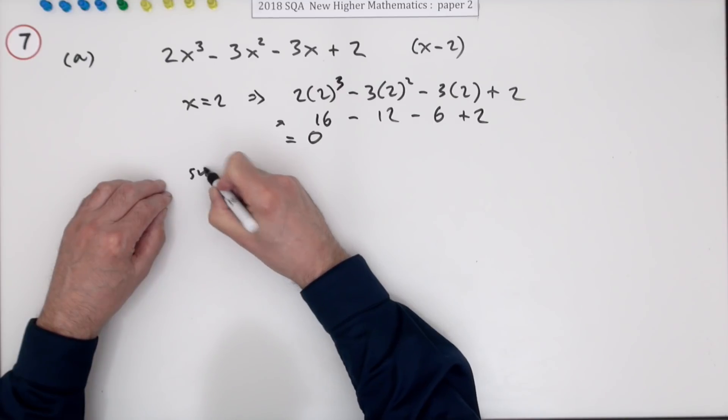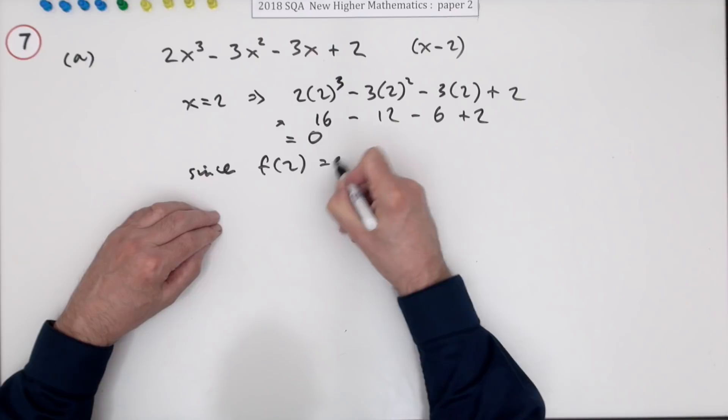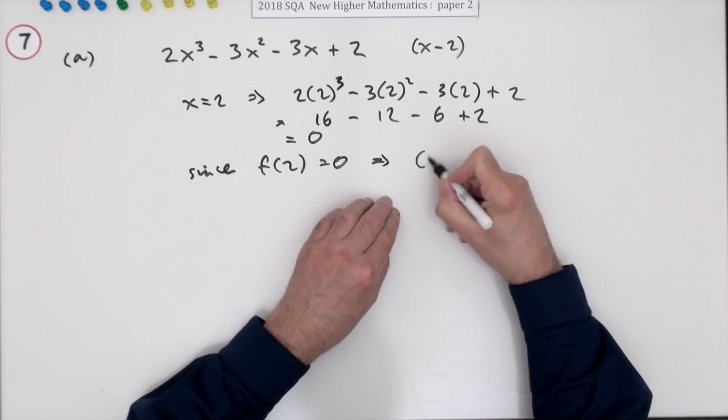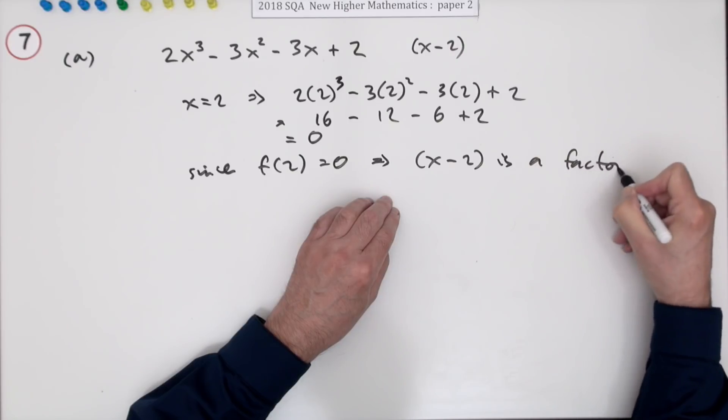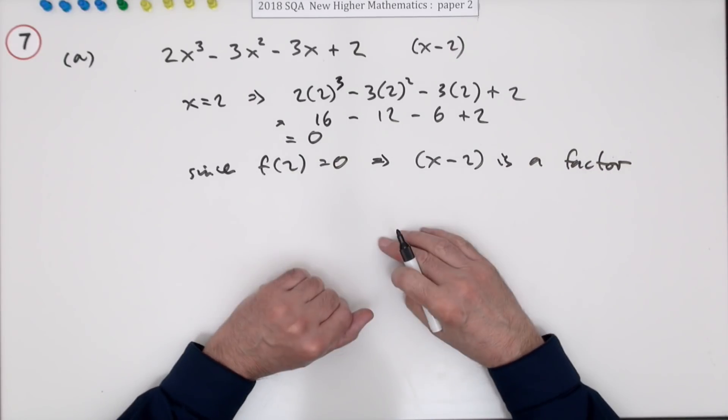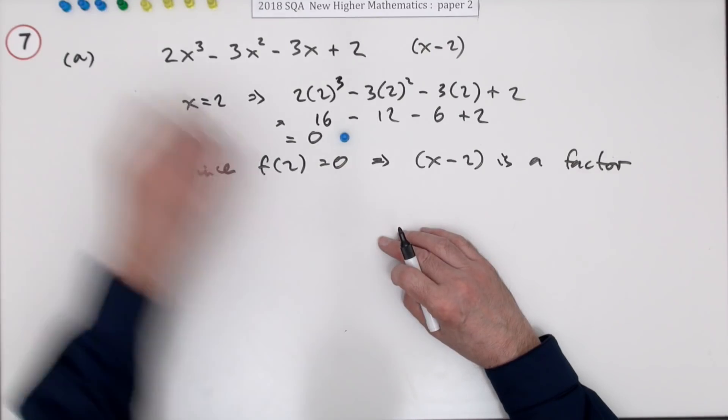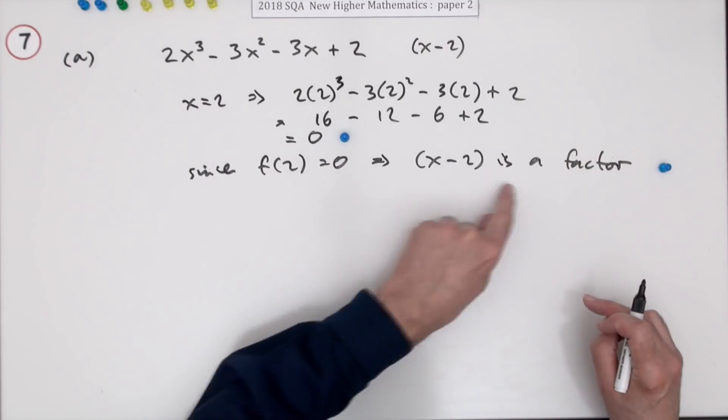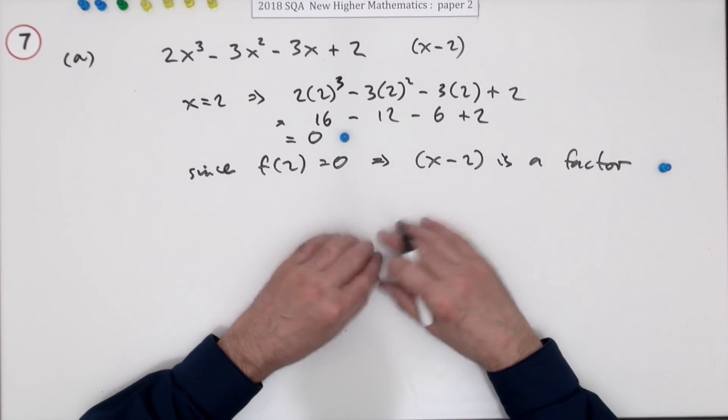And then you can say that means x minus 2 is a factor. Now if you did that you would get the two marks. You'd get one for evaluating it to get the answer zero and the other one for making this complete statement. However the problem with this is it's a dead end.